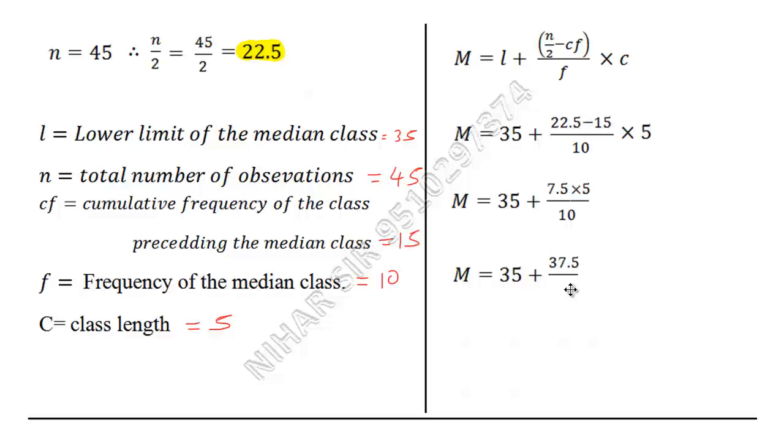Now this will be 35, and here 37.5, multiplication of these two upon 10. Now we can divide it by 10 very easily. That will be 3.75. We will just shift this decimal point one step left, shortcut division method. So this is 3.75, and adding these two will give me 38.75, and that's median.